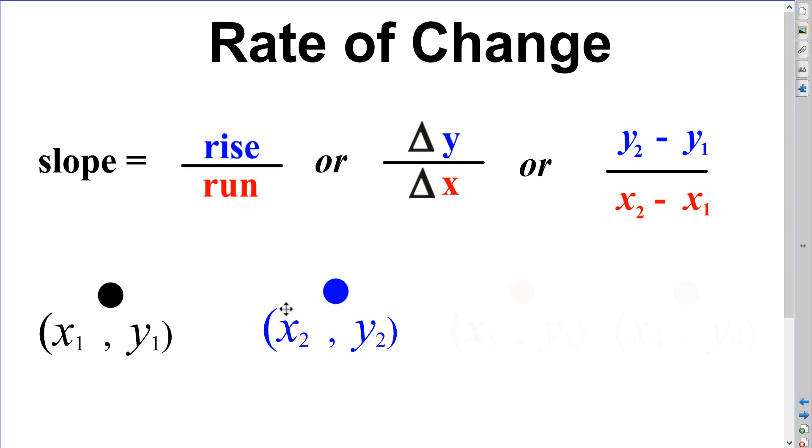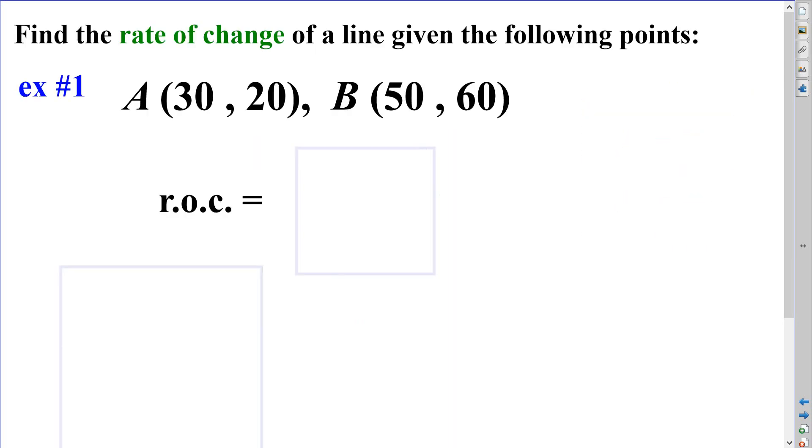Those little values are subscripts, not exponents, and they have no mathematical value. They're just naming points. If I have a point with an ordered pair (x, y), and this was my first point, I would call it x1, y1. If I had another point, I would call that one x2, y2. If I had a third point, I would call that x3, y3. If I had a fourth point, I'd call it x4, y4, and so on. Well, you only need two points.